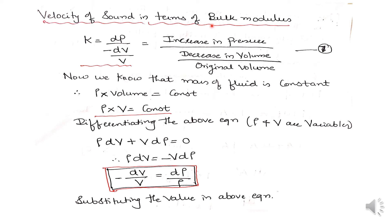Bulk modulus is denoted by the symbol K and is defined as the ratio of increase in pressure divided by the volumetric strain, where the change in volume is the decrease in volume relative to the original volume. So K equals dP divided by negative dV over V. The negative sign is used because as pressure increases, volume decreases.